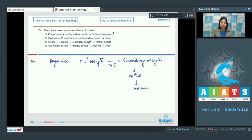Number 2. Oogonia, primary oocyte, secondary oocyte and ovum is correct. Number 3. Ovum, oogonia, secondary oocyte and primary oocyte is incorrect. Number 4. Secondary oocyte leads to the formation of primary oocyte is also incorrect. So the correct answer becomes option number 2.